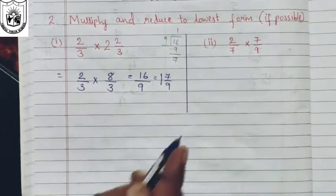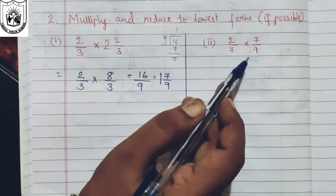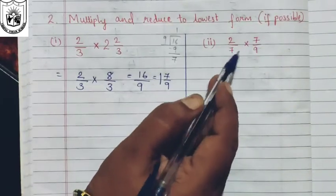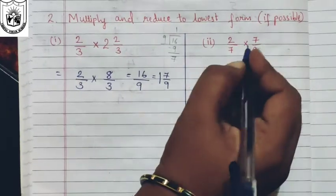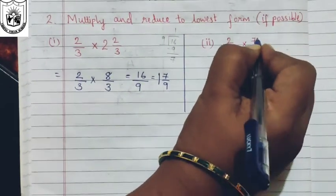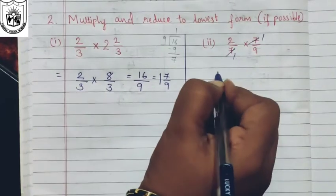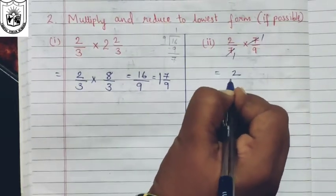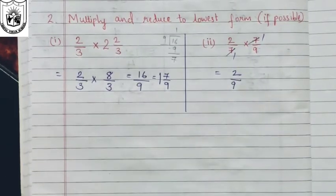Let us solve the second question here: two-seventh multiplied by seven-ninth. If you want, you can multiply to get fourteen over sixty-three and then simplify, or you can see that the two sevens cancel out. So what remains is two ones are two and nine ones are nine, giving you 2/9.